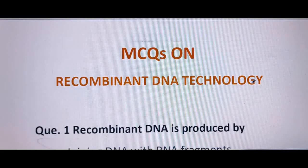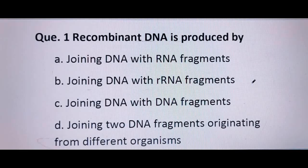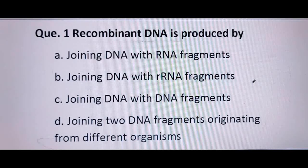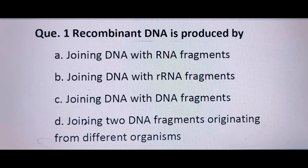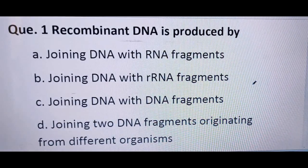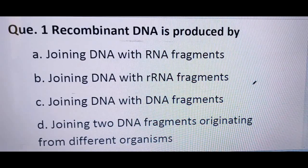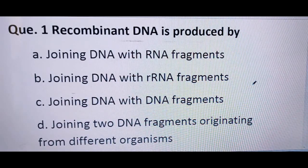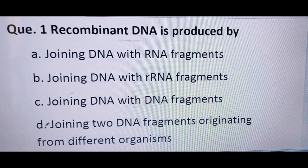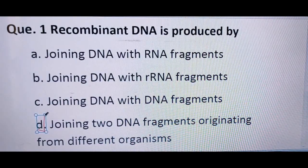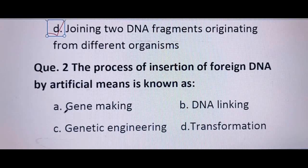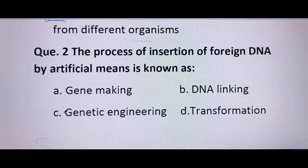Let's start with the first question: recombinant DNA is produced by — A) joining DNA with RNA fragments, B) joining DNA with rRNA fragments, C) joining DNA with DNA fragments, D) joining two DNA fragments originating from different organisms. While producing recombinant DNA, we add foreign DNA into our plant DNA, so both DNAs are from different organisms. The correct answer is D.